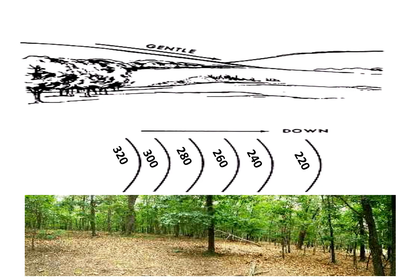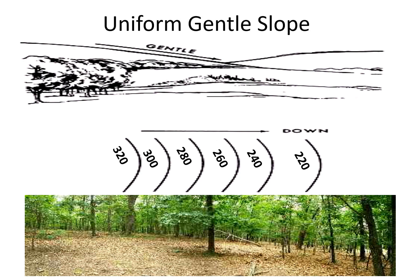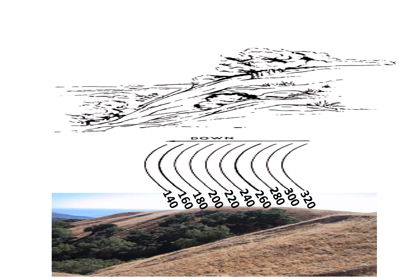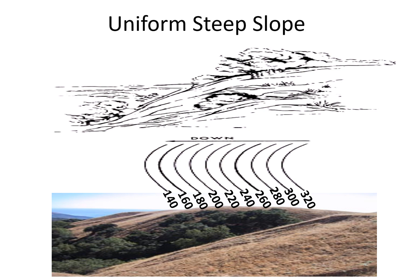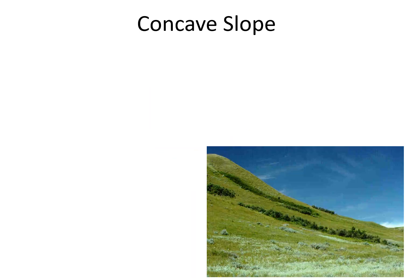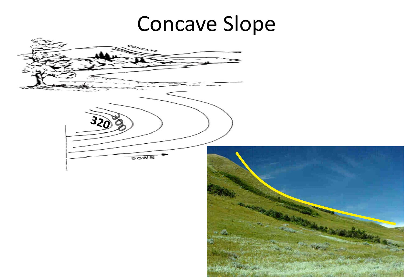Slopes can also be shown in different ways. A uniform gentle slope has contour lines evenly spaced and quite far apart from top to bottom of the hill. A uniform steep slope has contour lines very close to each other from top to bottom. A concave slope means the contour lines are closer together near the top, but wider apart as you come down the relief feature.